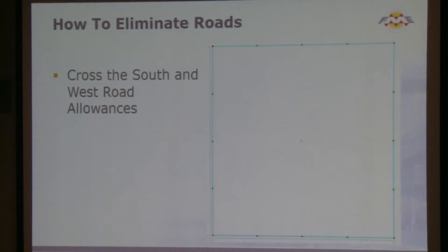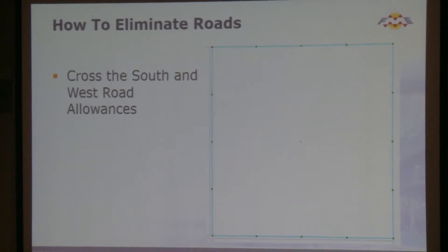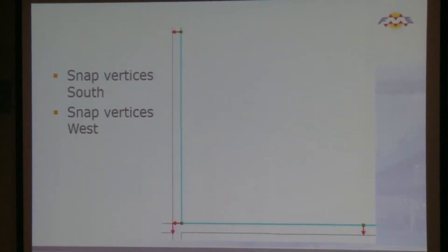So we have to eliminate roads. This seems like a fairly easy thing. Those are the vertices of the polygon, and all we need to do is expand the southernmost vertices down so that they match the north vertices of the next polygon, and expand the east vertices to the west. All you would do is snap the vertices south and snap the vertices west.